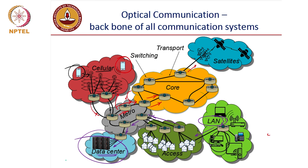Not just to the data center — between different racks of the data center, people have started using optical fibers. Between the motherboards of the servers, people have started using optical fibers because that turns out to be the highest speed communication link available.